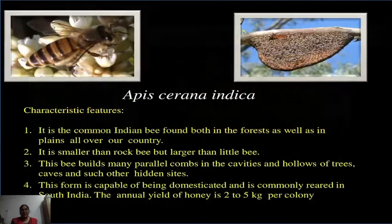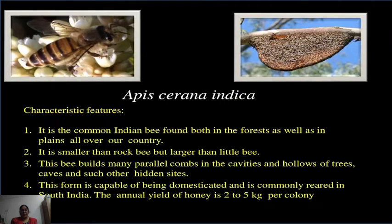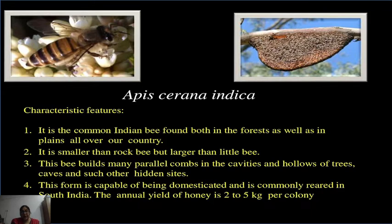Next is Apis cerana indica, commonly called the Indian bee, found both in forests and in the plains all over the country. It is also called the Asiatic, Eastern, or Himalayan honey bee. Apis cerana is found across a vast range from northern India through Southeast Asia to Malaysia, Indonesia, the Philippines and Japan. It is characterized by a smaller, narrower body than the Western bees and has quite marked yellow bands between the abdominal segments. It is renowned for adapting to seasonal changes rapidly.